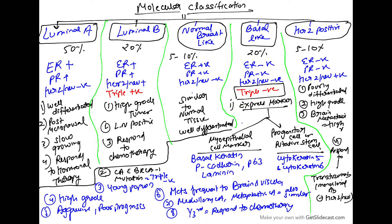The molecular classification is very important. There are five subtypes: Luminal A, Luminal B, normal breast-like, basal-like, and HER2-neu positive. Luminal A is ER-positive, PR-positive, HER2-neu negative. Luminal B is ER-positive, PR-positive, HER2-neu positive — triple positive. Normal breast-like is ER-positive, PR-positive, HER2-neu negative, similar to normal tissue. Basal-like is triple negative. HER2-neu positive is ER-negative, PR-negative, only HER2-neu positive.